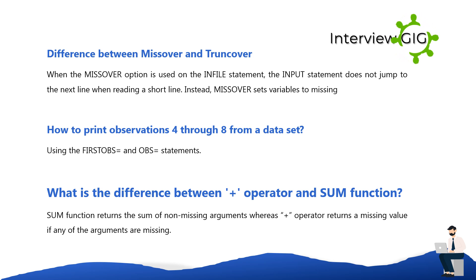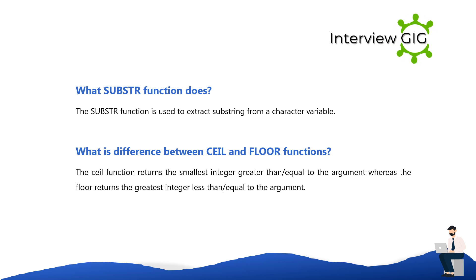How to print observations 4 through 8 from a dataset? Using FIRSTOBS equals and OBS equals statements. What is the difference between PLUS operator and SUM function? The SUM function returns the sum of non-missing arguments, whereas the PLUS operator returns a missing value if any of the arguments are missing. What does the SUBSTR function do? The SUBSTR function is used to extract a substring from a character variable.